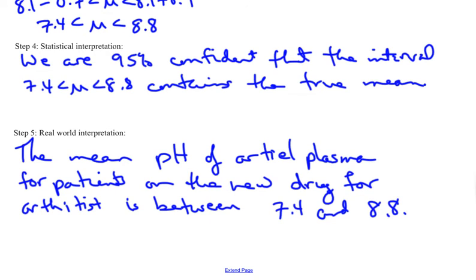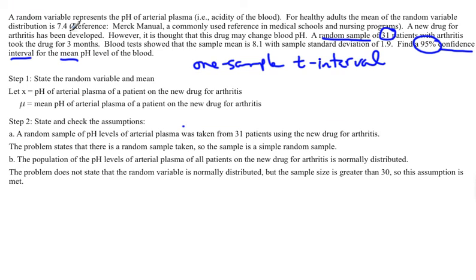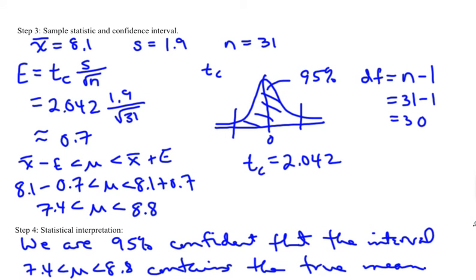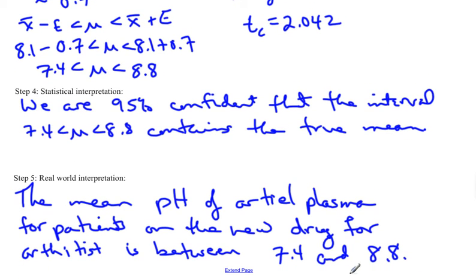As a side note, we were told that for a normal healthy adult, the mean pH is 7.4. Notice that 7.4 is in this interval — it is actually one of the endpoints. Since 7.4 is in the interval, the true mean could in fact be 7.4. So it may be that the new drug does not actually change the pH of blood. The value could be anywhere in this range up to 8.8, but because 7.4 is in the interval, we cannot say that the drug would change it.